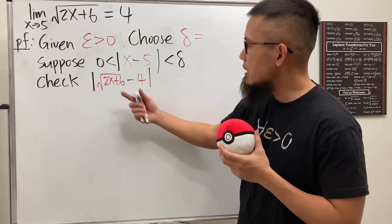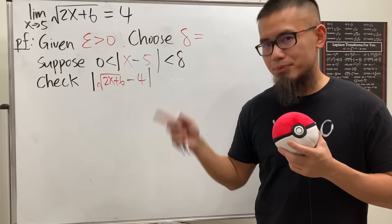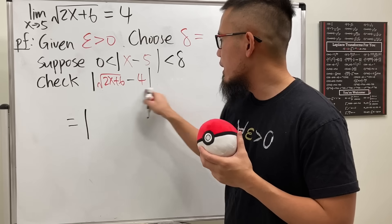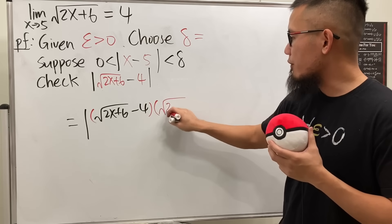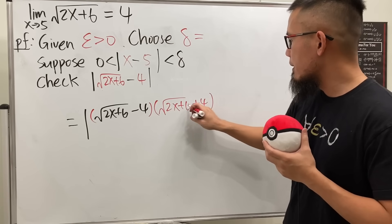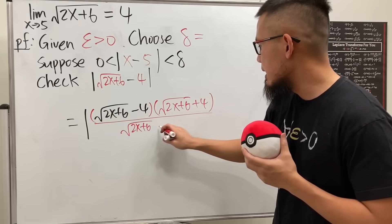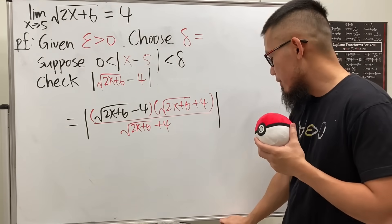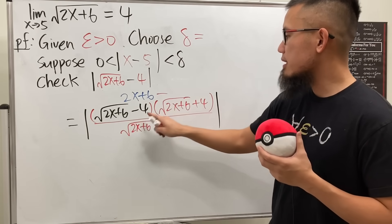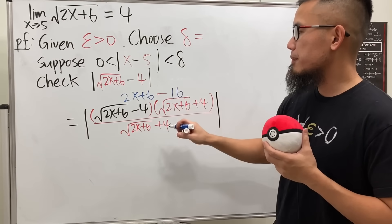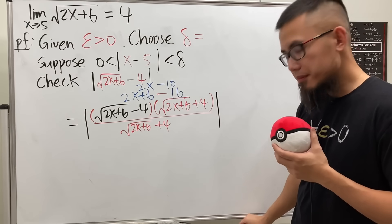We have two terms and a square root, so it's a good idea to multiply by the conjugate. This equals the absolute value of (√(2x+6) - 4) multiplied by (√(2x+6) + 4), divided by (√(2x+6) + 4). On the top, multiplying gives (2x+6) minus 4², which is 2x + 6 - 16, so the numerator is 2x - 10.